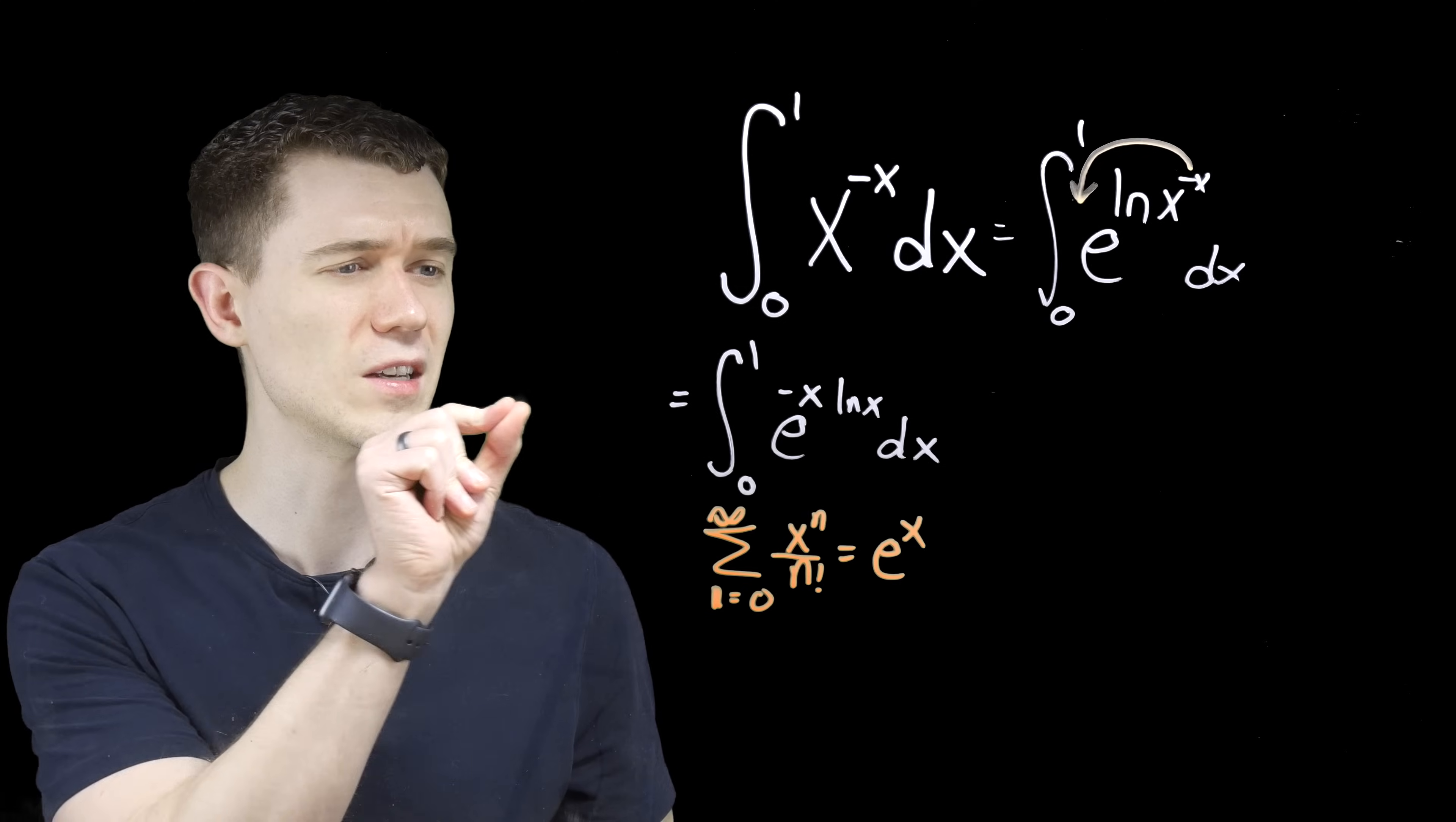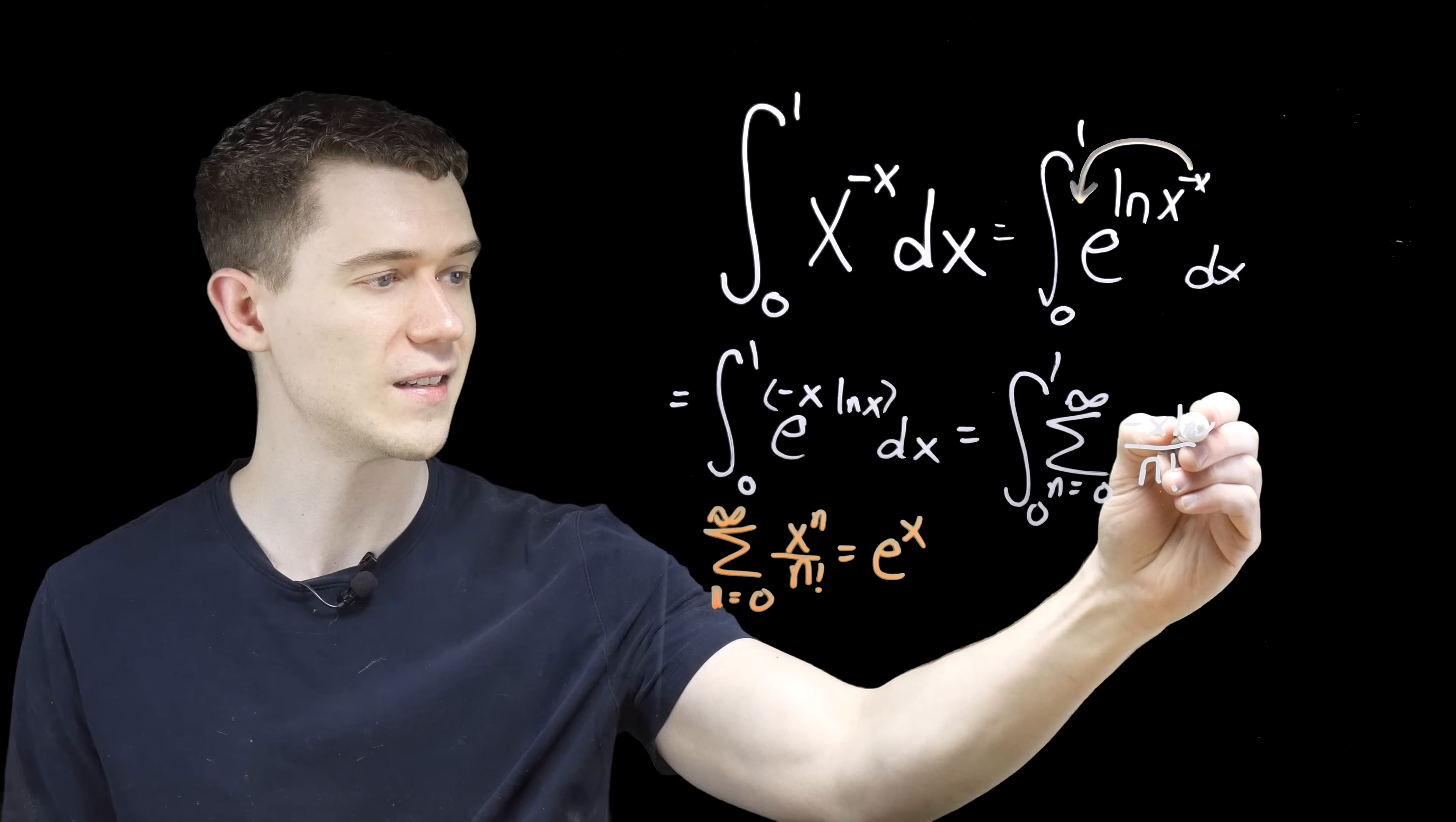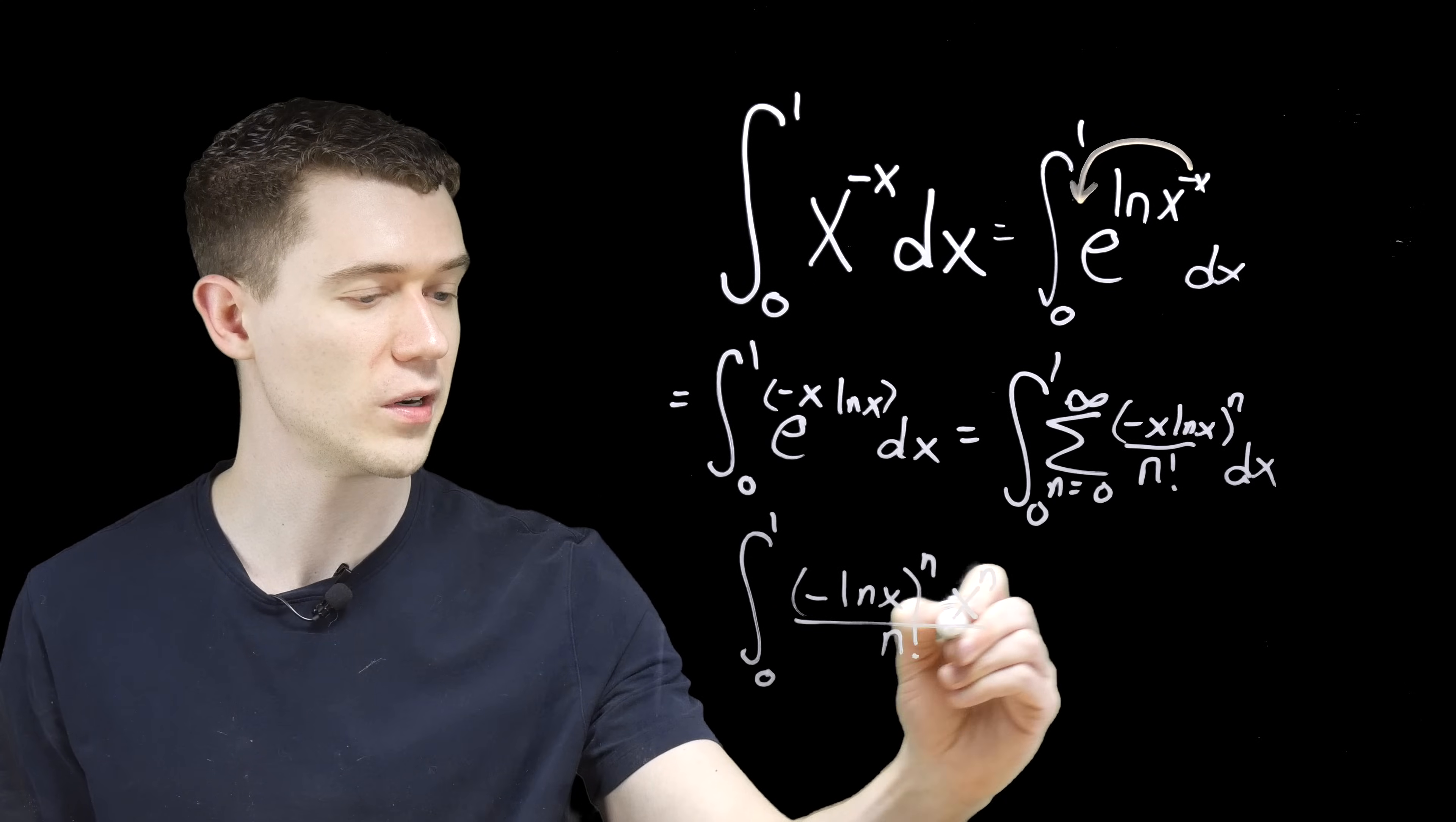So now what we have, integral 0 to 1 still, and we have this sum from n equals 0 to infinity. This is over n factorial. But instead of x, we have this entire exponent, minus x ln x. This is all to the n. And we still have dx. Now I'm going to take just a second to rewrite this integral. And I'm going to write minus ln x, I'm going to take this to the n, and then we also have an x to the n. This is over n factorial dx.